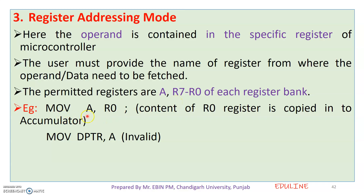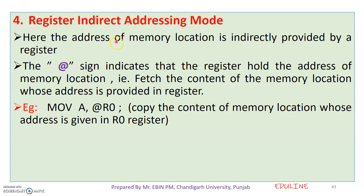In register addressing mode, for example: MOV A, R0 — the content of R0 is copied into the accumulator. Note that DPTR is invalid in register addressing mode. The @ sign indicates that the register holds the address of a memory location.